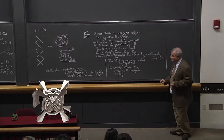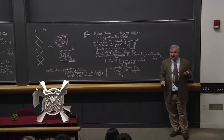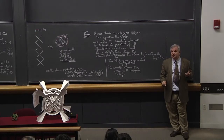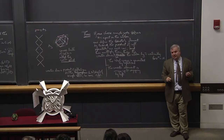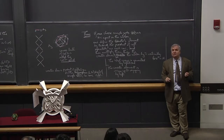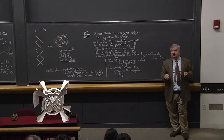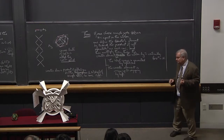Coxeter element to the n is the identity — let's put it capital Cox — which is a fundamental property of the Coxeter element. And in the classical theory, the exponents appear from the eigenvalues of the Coxeter element — this was the correlation found by James. So let's prove this theorem.